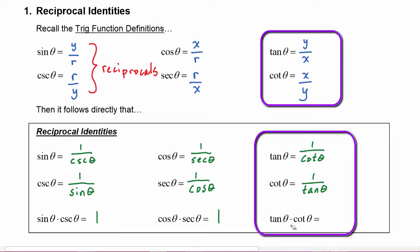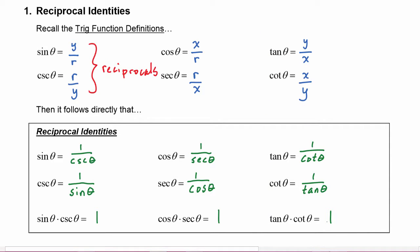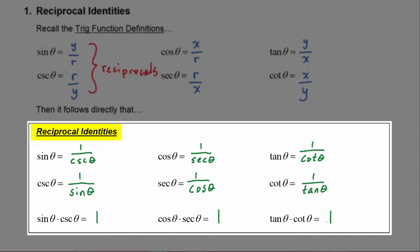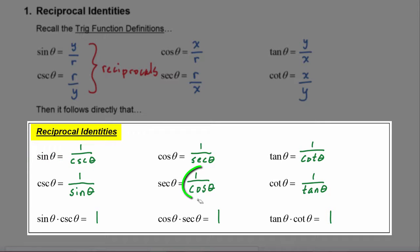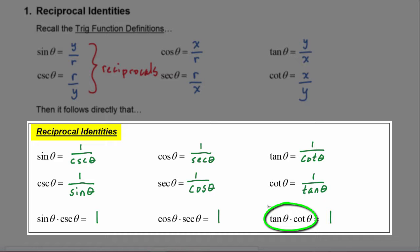Which means if we multiply tangent theta times cotangent theta, the result will be one. So these are known as the reciprocal identities and they can be substituted for each other in any problem. Anywhere I see one over cosecant of theta I could replace it with sine of theta; if I see one over cosine of theta I can replace it with secant of theta; if I see tangent theta times cotangent theta I can replace it with one. That's how identities work.